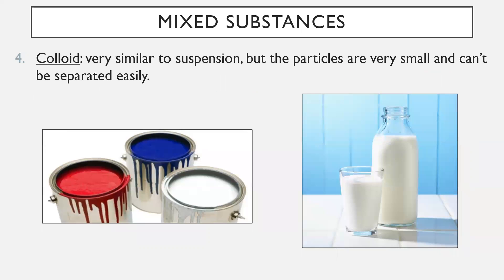The fourth type is a colloid, which is similar to a suspension but the particles are very, very small and can't be separated out easily. Smoke might actually be a better example of a colloid. Paint is another example — very small paint particles float in a water-based or oil-based solution. Milk is a classic colloid: it's made up of several small particles floating in a water-based solution that can't easily be separated out — one of the only ways is by boiling off the excess water, leaving evaporated milk.